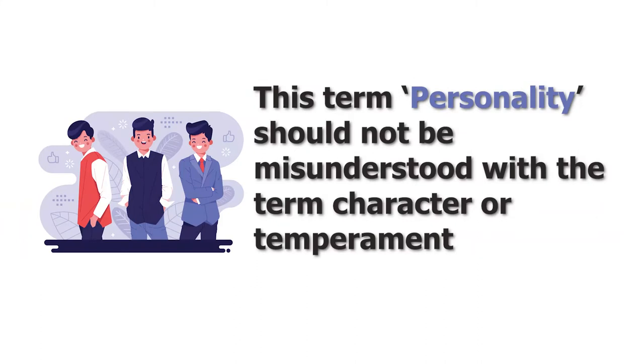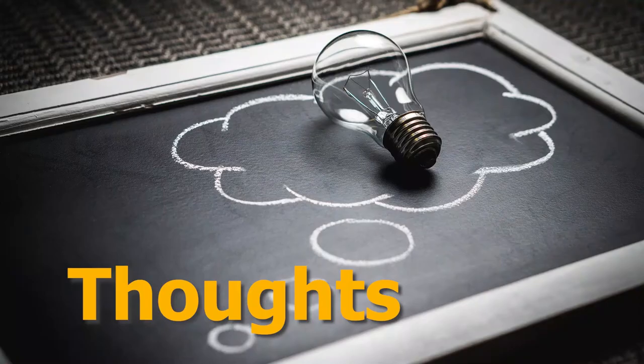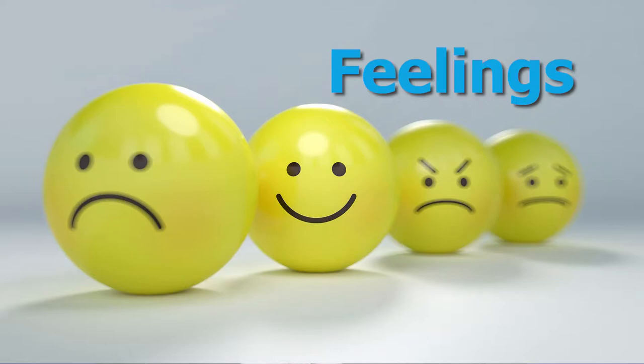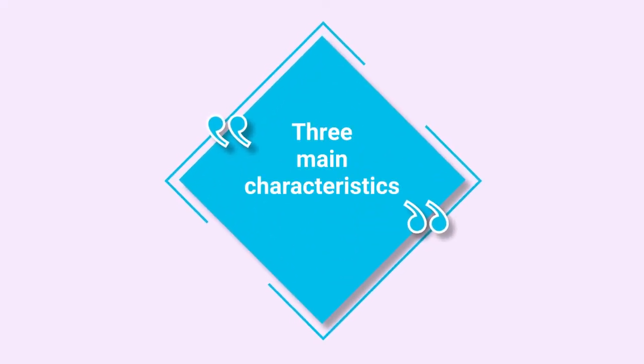From these two perspectives of individuality and consistency, personality refers to the unique way in which a person thinks, acts, and responds. Or we can say personality refers to all those permanent traits of an individual that give consistency to his behavior. The term personality should not be misunderstood with the terms character or temperament — character and temperament signify value judgments, although both are integral parts of personality. The thoughts, feelings, actions and behaviors which reflect personality have three main characteristics.